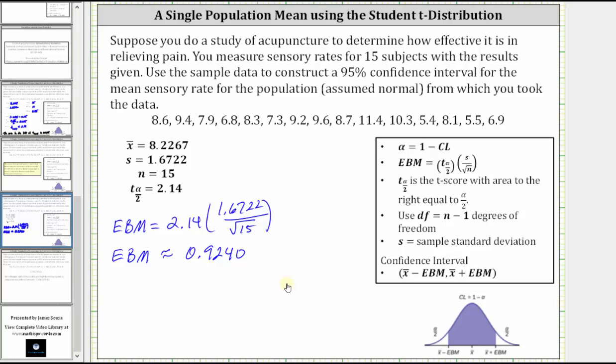And now that we have the error bound, we can determine the confidence interval. The lower bound is x-bar minus the error bound, which is 8.2267 minus 0.9240. And the upper bound is x-bar plus the error bound.